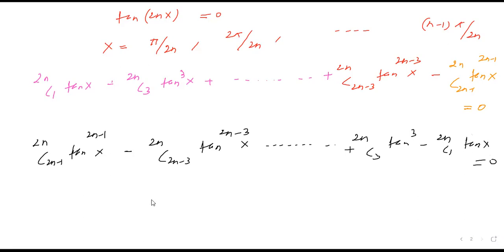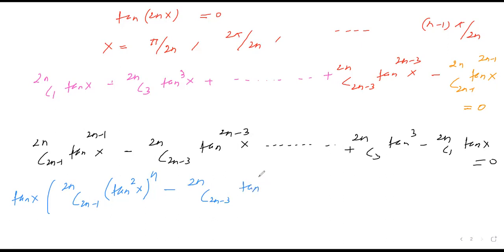अब इसमें से मैं tanx common निकाल लेता हूं। tanx common निकालने के बाद यह बचेगा: 2Nc(2N−1)·tan^(2N−2)·x − 2Nc(2N−3)·tan^(2N−4)·x + ... − 2Nc1 = 0। बहुत interesting problem है। अब आप यह कह सकते हैं कि यह पूरा equation किस-किस x पे 0 हो रहा है — obvious सी बात है, x: π/2N, 2π/2N, ..., (n−1)π/2N होंगे।